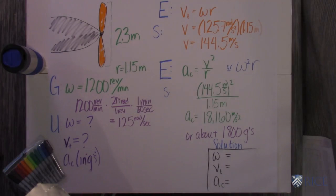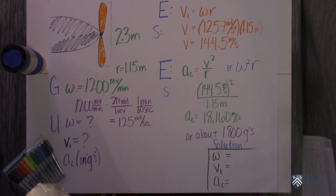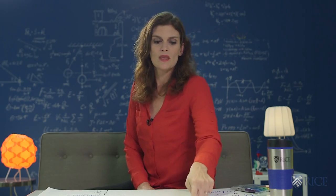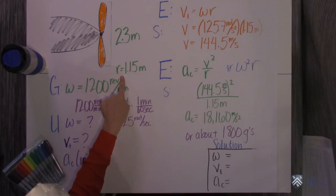So the linear velocity is the angular velocity times the radius. We know that if this is 2.3 meters and it's the whole propeller, one of them is 1.15 meters.